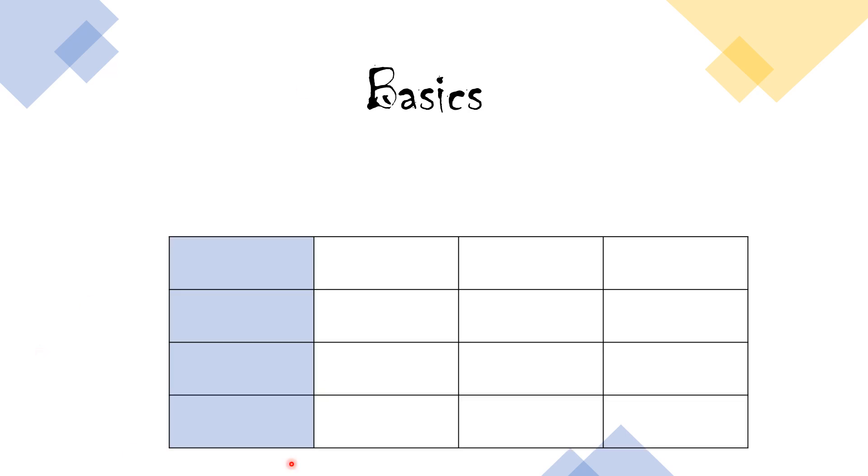Now let's see what we mean by column. Each of these vertical bars is called a column. Column 1, column 2, 3, and column 4.